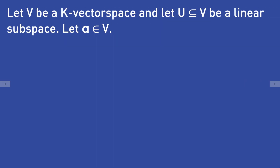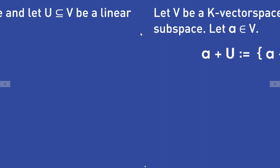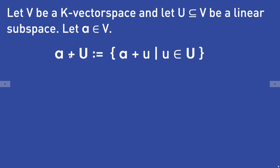Let v be a k vector space and let U be a linear subspace of that vector space v. Let a be a vector in the vector space v. Now we define a new set which we call a plus U as the set that contains all the vectors a plus u where u is an element of the subspace U.